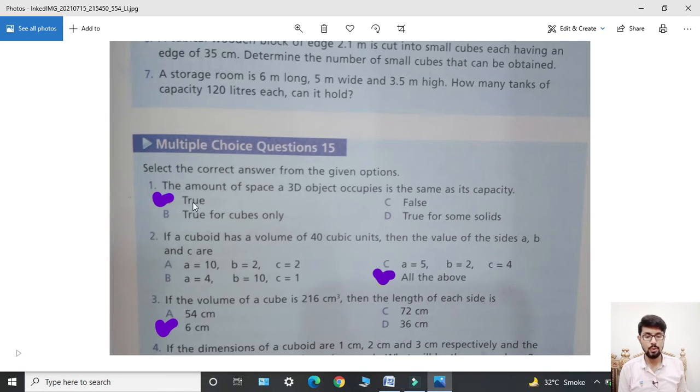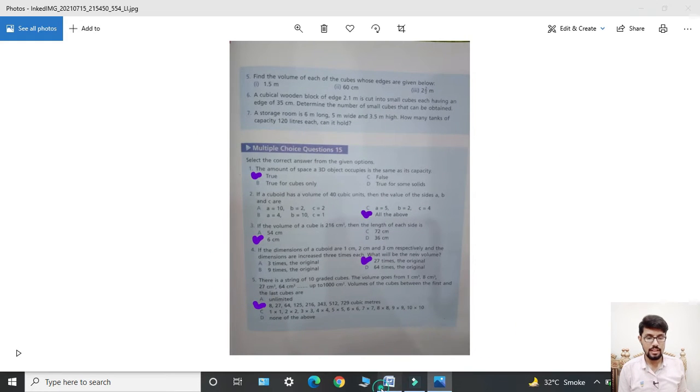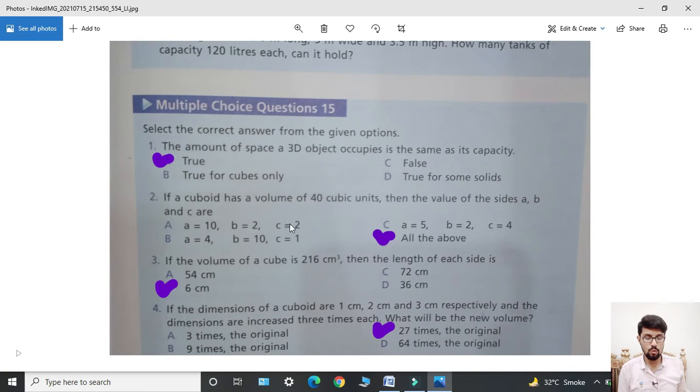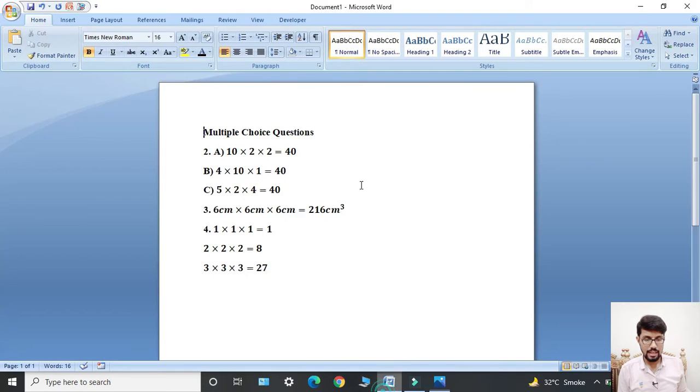Second: If a cuboid has a volume of 40 cubic units, then find the value of the sides a, b, and c. In option A, values given are a = 10, b = 2, c = 2. When we multiply these together: 10 × 2 × 2 equals 40.